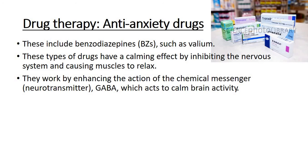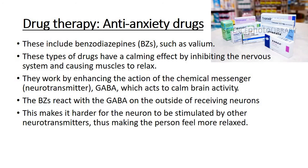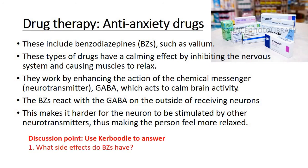These types of drugs have a calming effect by inhibiting the nervous system and causing muscles to relax. They work by enhancing the action of the neurotransmitter GABA, which acts to calm brain activity. GABA is just another neurotransmitter — BZs enhance the effect of GABA by having a calming effect. BZs react with GABA on the outside of receiving neurons, and this makes it harder for the neurons to be stimulated by other neurotransmitters, thus making the person feel more relaxed. It effectively reduces overstimulation and has that overall calming effect, which leads to reduced anxiety. Side effects of BZs can include dizziness, nausea, and headaches. It's important to note that any drug therapy can have side effects, because we are all individually different from a biological level.